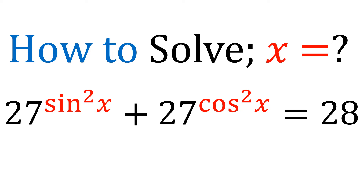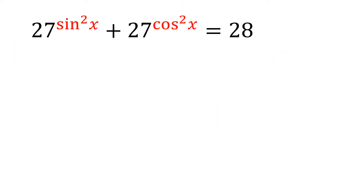Here we have one trigonometric exponential equation for which we have to find the values of x. The equation is 27^(sin²x) + 27^(cos²x) is equal to 28.